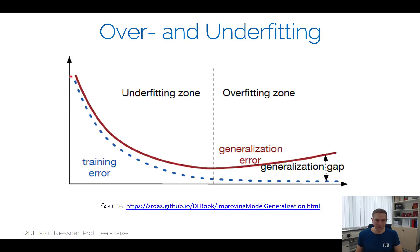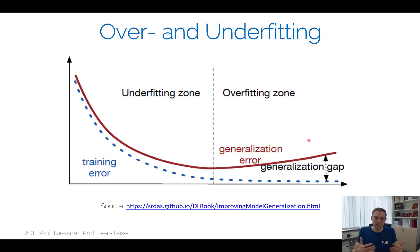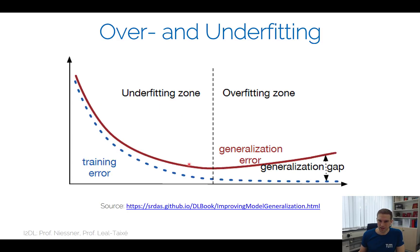With a big enough model, the training error goes down and down, but the validation error eventually goes up — the model is so powerful it memorizes each training sample, which is better for training error but hurts generalization. One thing you can do is early stopping: monitor both curves and stop training at the point where validation error is at its best — somewhere in the middle.